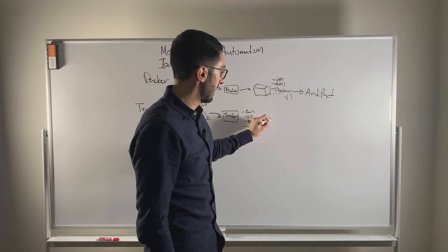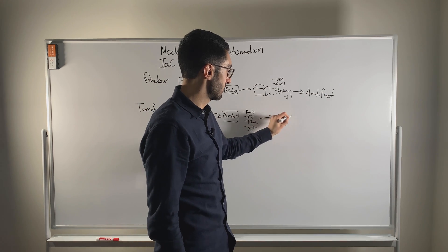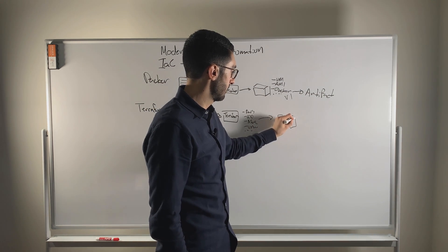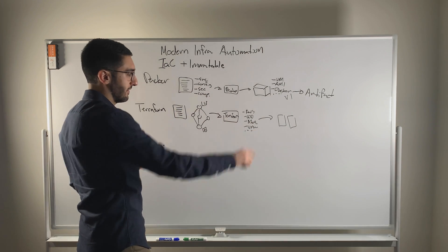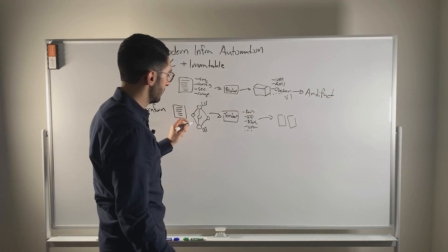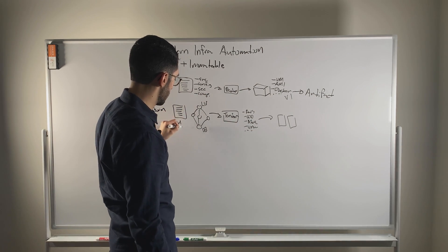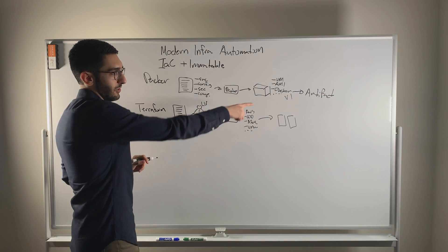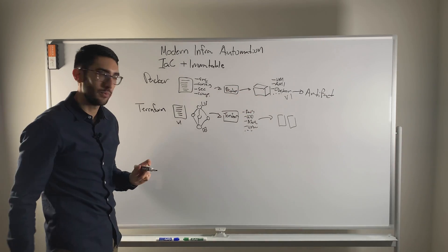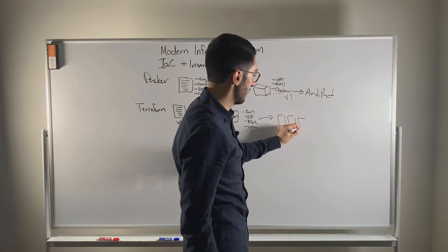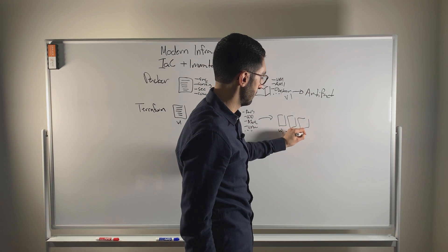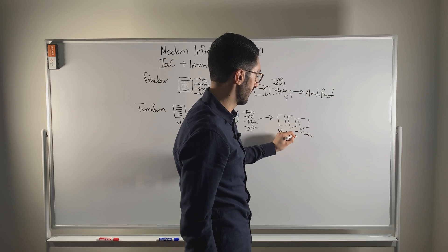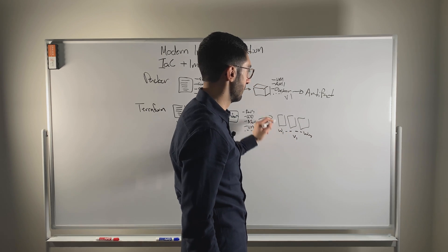Ultimately, Terraform is going to go out and create that infrastructure. The way these things might be paired together is: as part of the configuration, we say we want to deploy version one of our web server using the image we have. So these three web servers that come up — web server one, two, and three — are all running version one.